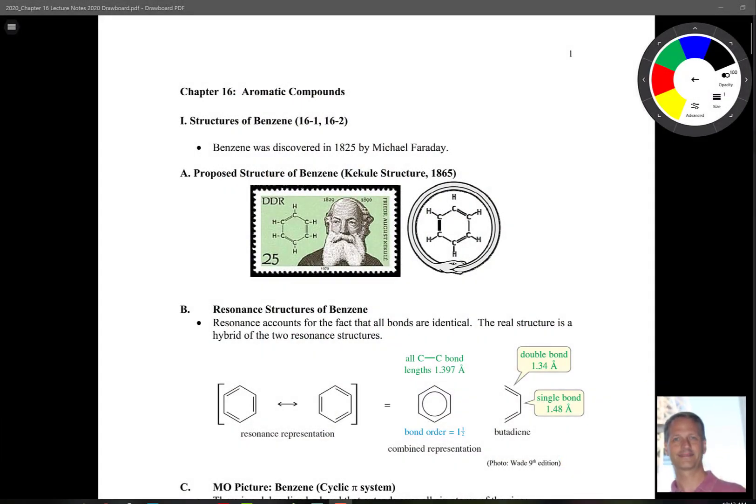Chapter 16 deals with aromatic compounds, so we're going to talk about benzene to start off and some molecular orbital stuff, and then we'll get into the idea of aromaticity and larger structures that have properties similar to that of benzene.